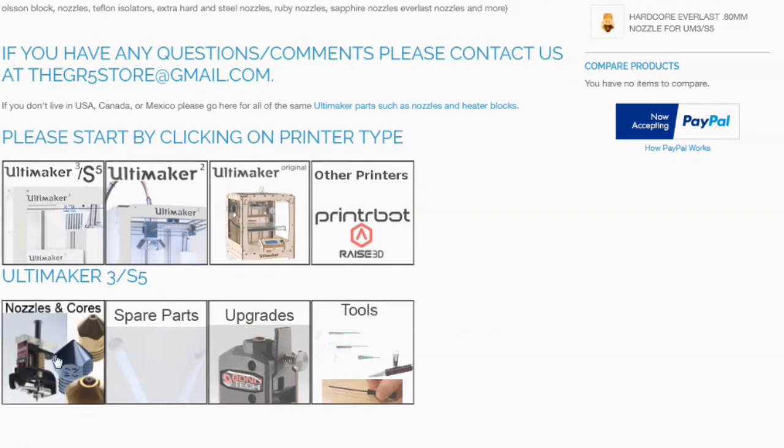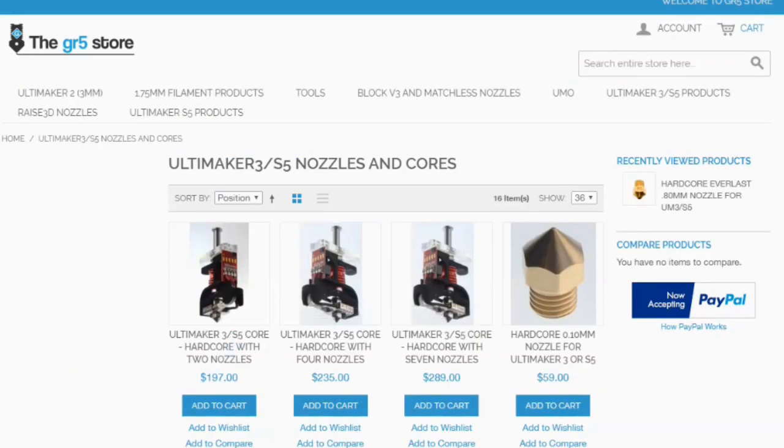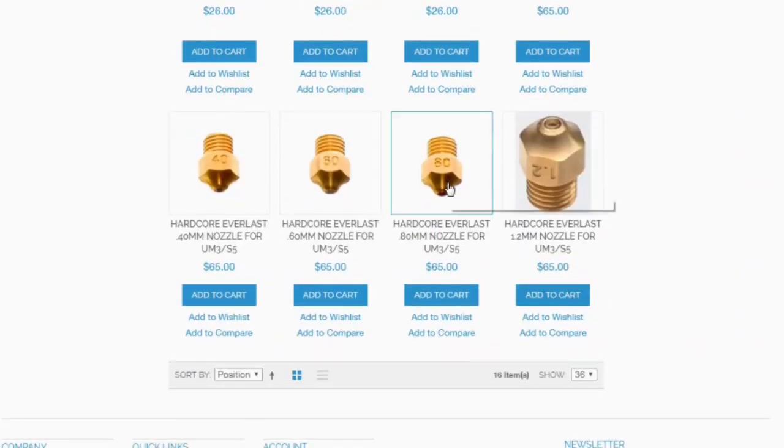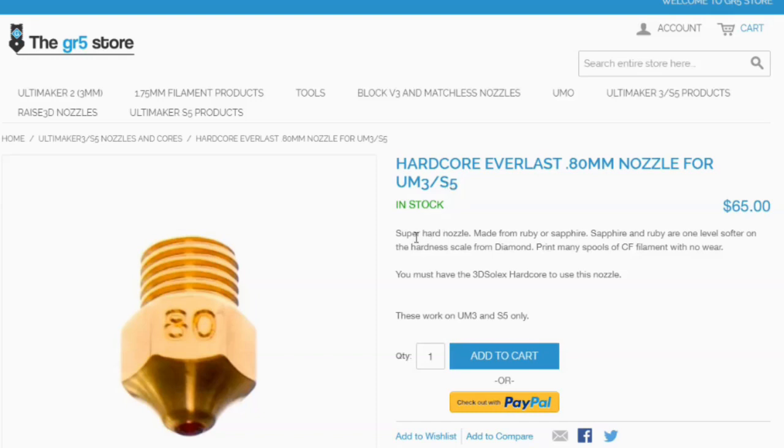For the Ultimaker 3 and the S5 I sell 3D Solex cores which let you use nozzles from 0.1mm all the way up to 1.2mm. And I also sell Ruby and Sapphire nozzles for printing carbon fill and glow fill.